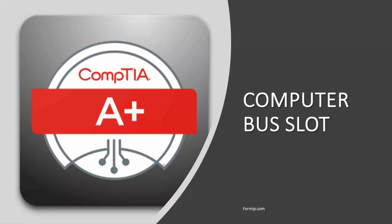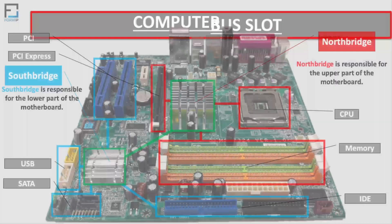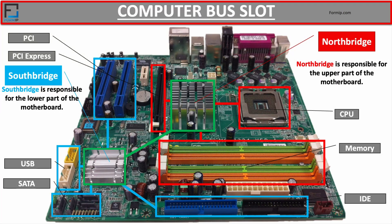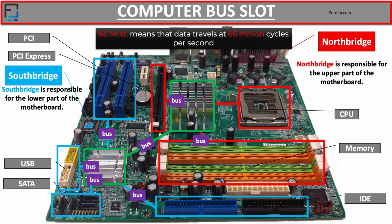As we saw in the previous course, the connection between the north and south chipsets of the motherboard is made using channels called buses. A bus is simply a set of channels that allows data and signals to travel between the components of the motherboard. The motherboard contains several types of buses with different bandwidth speeds. For example, a bus speed of 66 MHz means that data travels at 66 million cycles per second. The higher the bus speed, the better the computer will perform, because it will be able to send data faster.